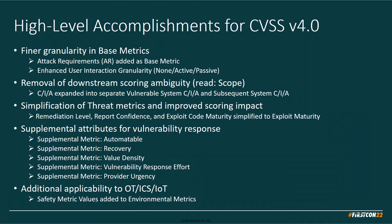The major high-level accomplishments for 4.0 are based on feedback from 30 members that attend every week for several years. After 3,000 person hours of effort, we've come up with finer granularity for base metrics, which is something that has been asked for. CVSS goes from 0 to 10, and sometimes there are bucketizations, so we're trying to add more fluidity to those 99 values.